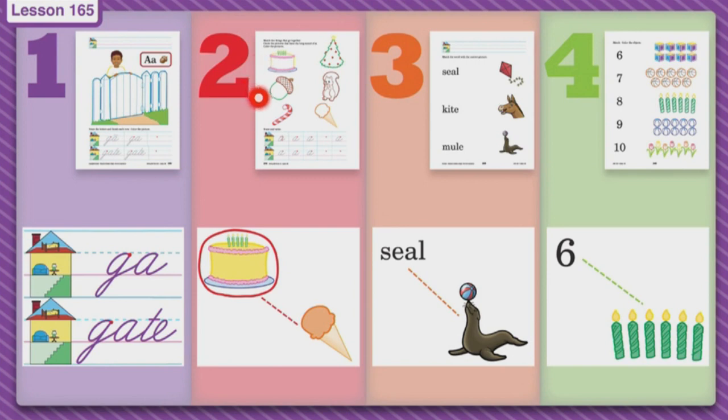The next one is acorn. Acorn. Candy cane. Candy cane. Tree. Tree. Frisky Whiskers. Frisky Whiskers. And ice cream. Ice cream.